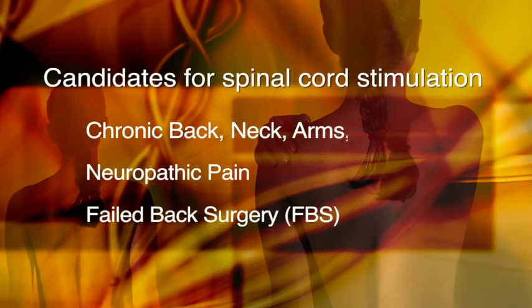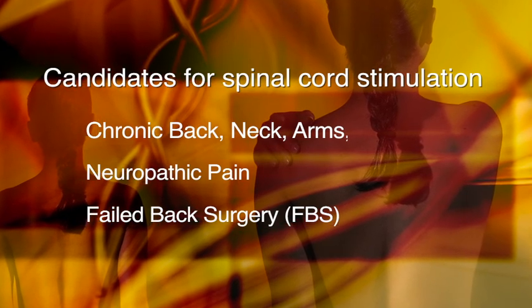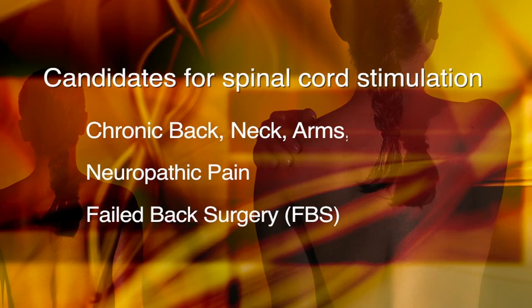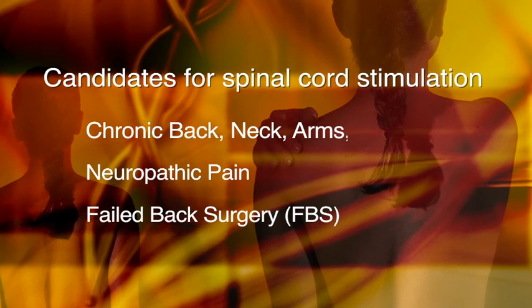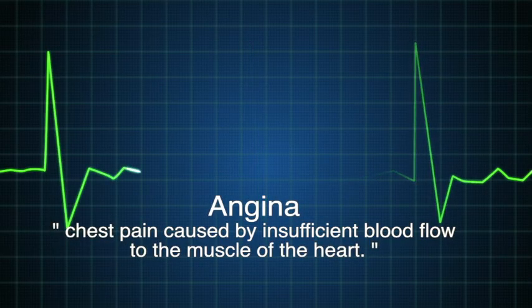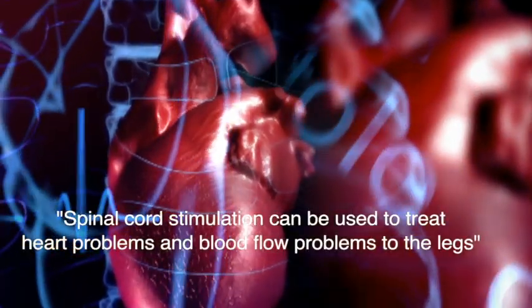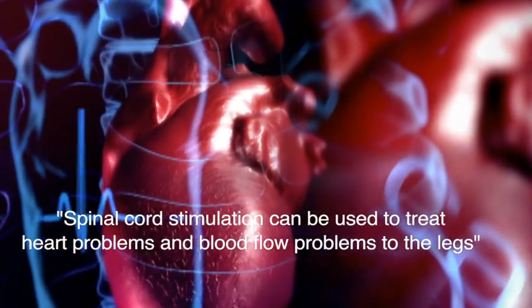Essentially, anyone who has severe pain going down their arm or their leg as a result of nerve damage or some other condition affecting the nerves could be a candidate for spinal cord stimulation. Not only can spinal cord stimulation be used to treat pain coming from the spine or nerves, but it can also be used to treat other types of pain. These include angina and peripheral vascular disease. There's actually a lot of evidence in the scientific literature supporting its value in the treatment of heart problems and problems with blood flow to the legs.